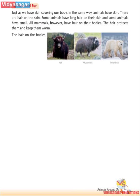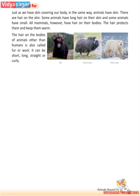The hair on the bodies of animals, other than humans, is also called fur or wool. It can be short, long, straight or curly. Animals like yak, musk oxen and polar bears that live in very cold areas have long hairs which keep them warm.